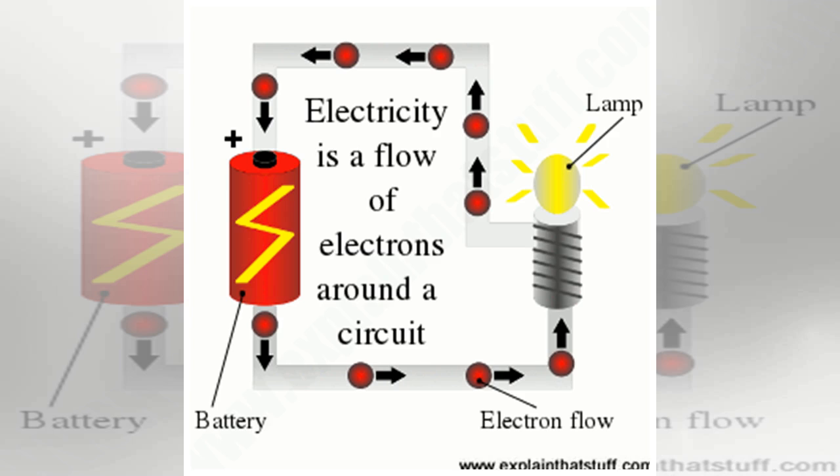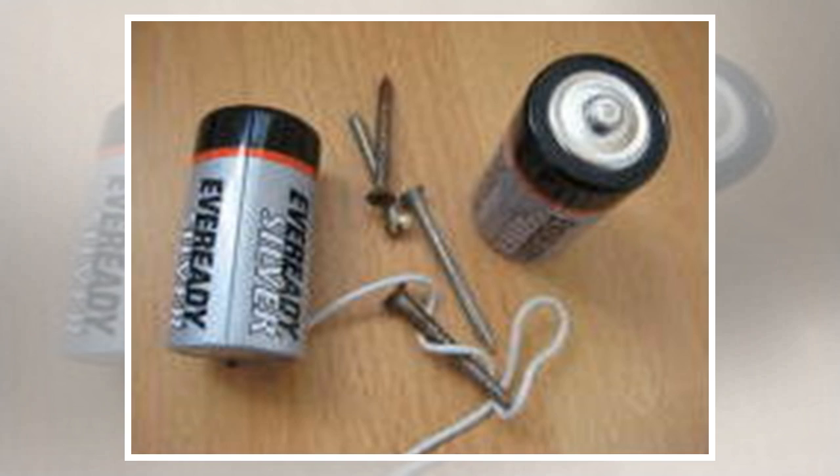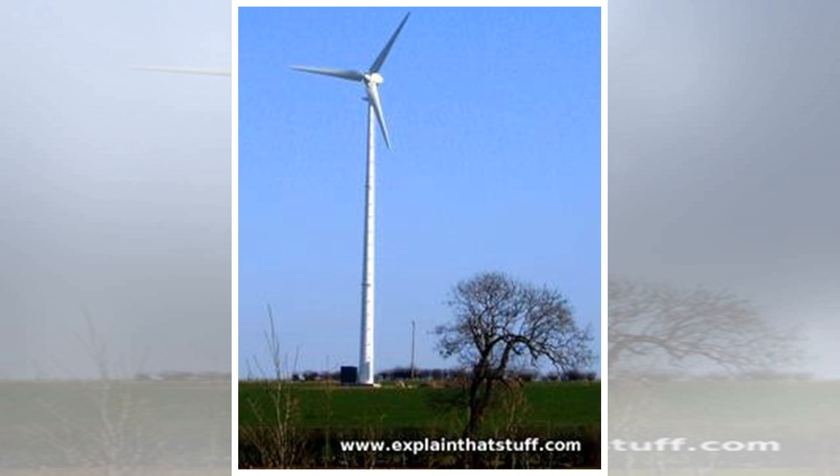Direct current and alternating current: Electricity can move around a circuit in two different ways. You can see electrons racing around a loop like race cars on a track, always going in the same direction. This type of electricity is called direct current, or DC, and most toys and small gadgets have circuits that work this way. In a direct current circuit, electrons always flow in the same direction.